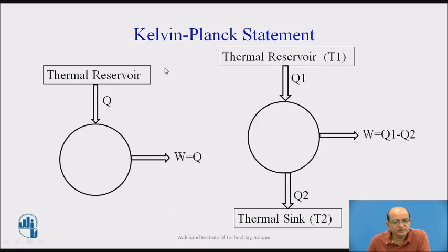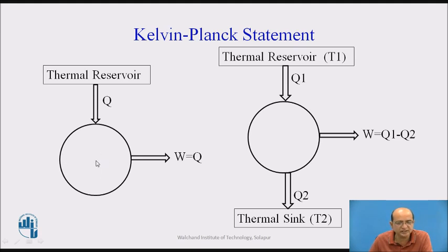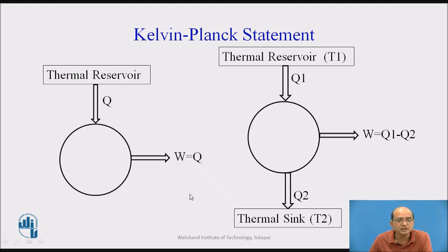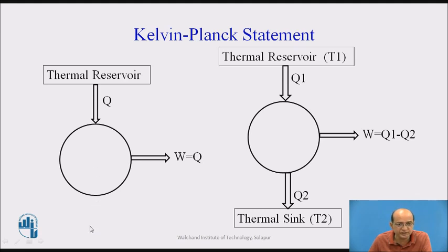With this figure, it can be better understood. According to the Kelvin Planck Statement, it is impossible to construct an engine where this circular portion represents the engine, which takes heat from a reservoir at high temperature and converts all that heat energy into useful work. This is an ideal condition — a hypothetical cycle which is impossible to construct, because it would have 100% efficiency with no heat rejection at all.